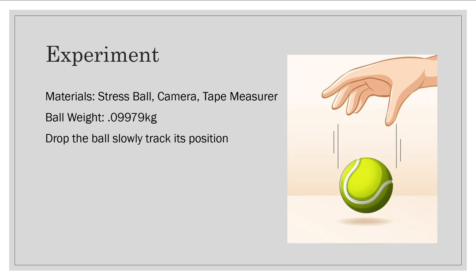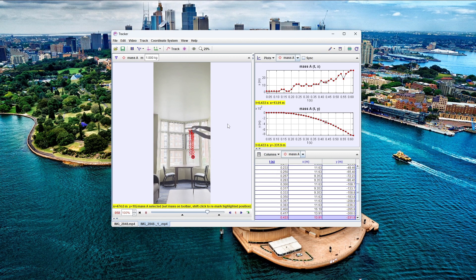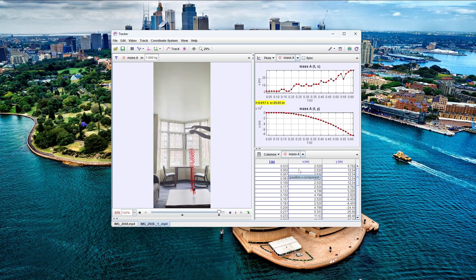So in this experiment, we will be using the same stress ball that we used last week. I will need to use my phone to record, and I will be using a tape measure to accurately get the distance the ball is dropped. Here is a video of me dropping the ball. You can see it is an exponential curve going down. You are able to get the time by subtracting the last time and the initial time.